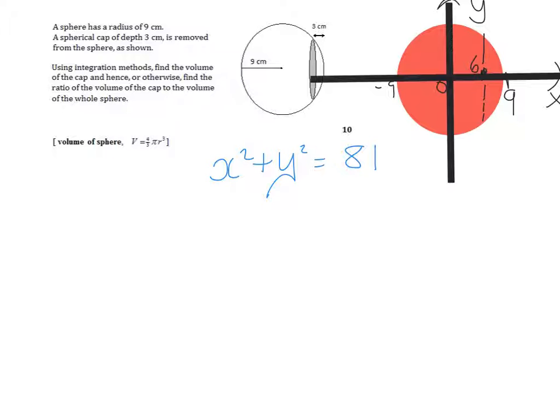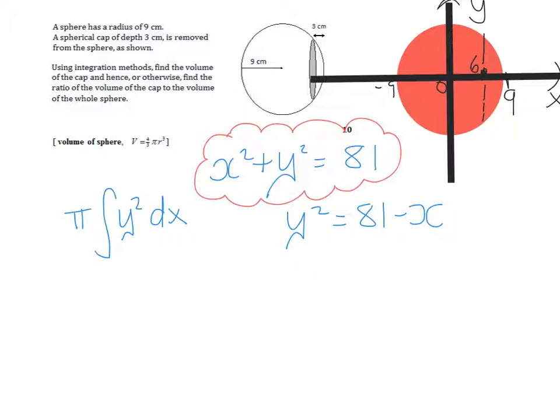I'm going to rotate a semicircle around the x axis which means I need to use the volume of revolution formula. So I'm going to be integrating pi y squared dx. Now I know that x squared plus y squared is 81. So I'm going to rearrange this and say y squared is 81 minus x squared. Now I know what I've got to integrate.